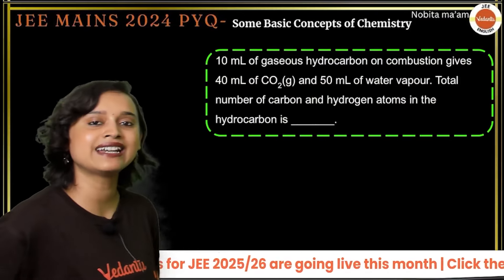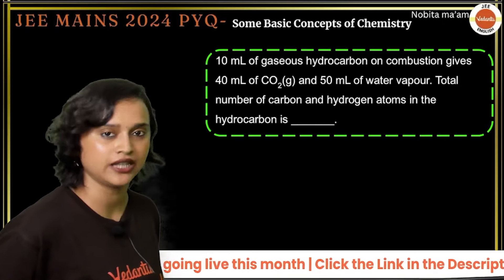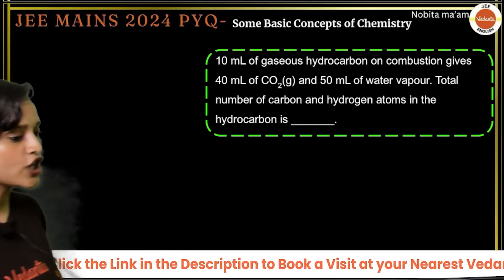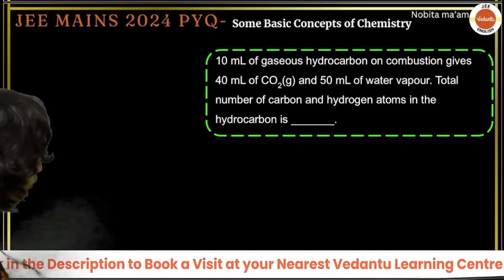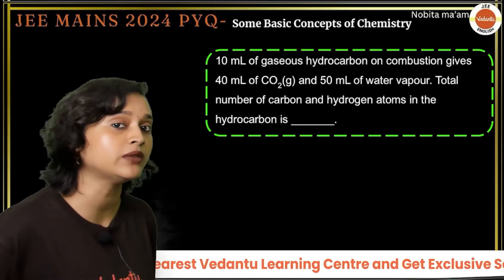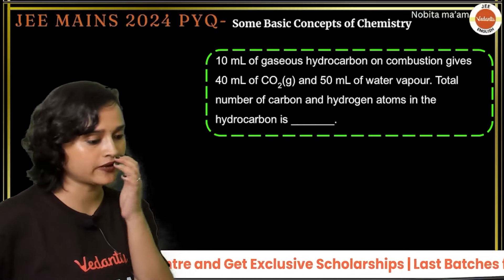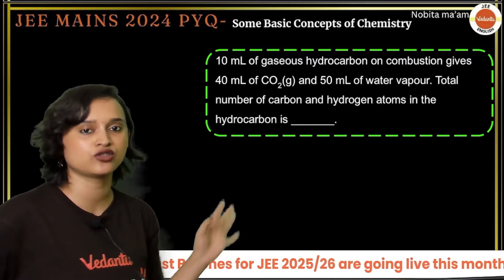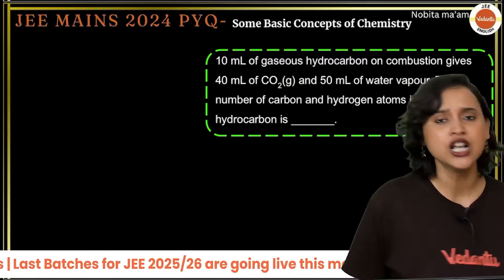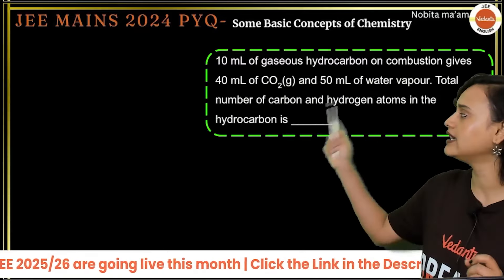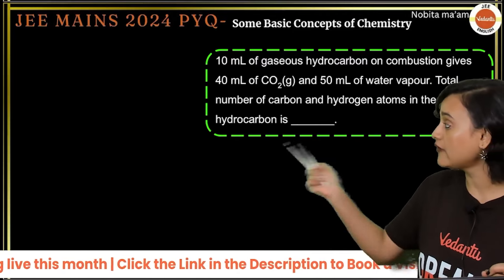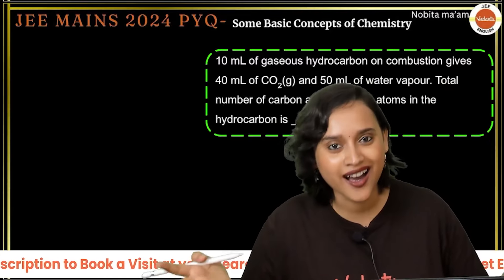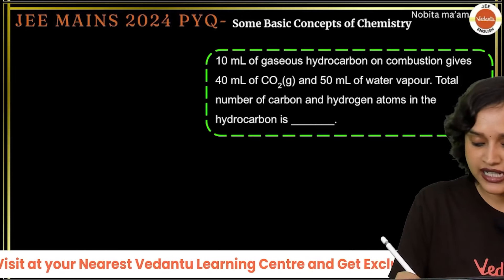The next question says: 10 mL of a gaseous hydrocarbon on combustion gives 40 mL of CO₂ and 50 mL of water vapor. Find the total number of carbon and hydrogen atoms. First we need to find the molecular formula of the hydrocarbon, then add up the carbon and hydrogen atoms.